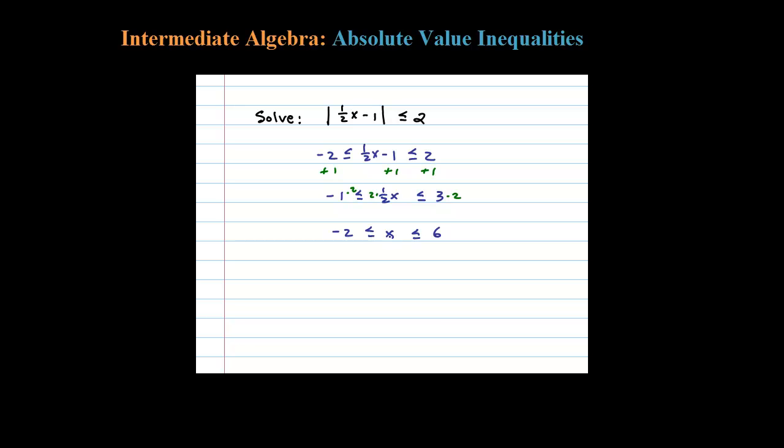Well, zero's in there, right? Try that: 1/2 times 0 is 0, minus 1 in absolute value is 1, and 1 is less than 2. Okay, so let's shade in all the numbers in between there on a number line. Here's my number line.